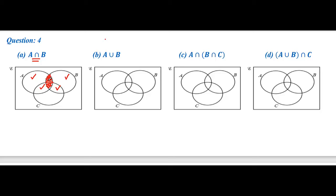So this is our answer. You can delete these arrows at the end of the question if you like. So this is our desired area. Now come to part B — this is A union B.